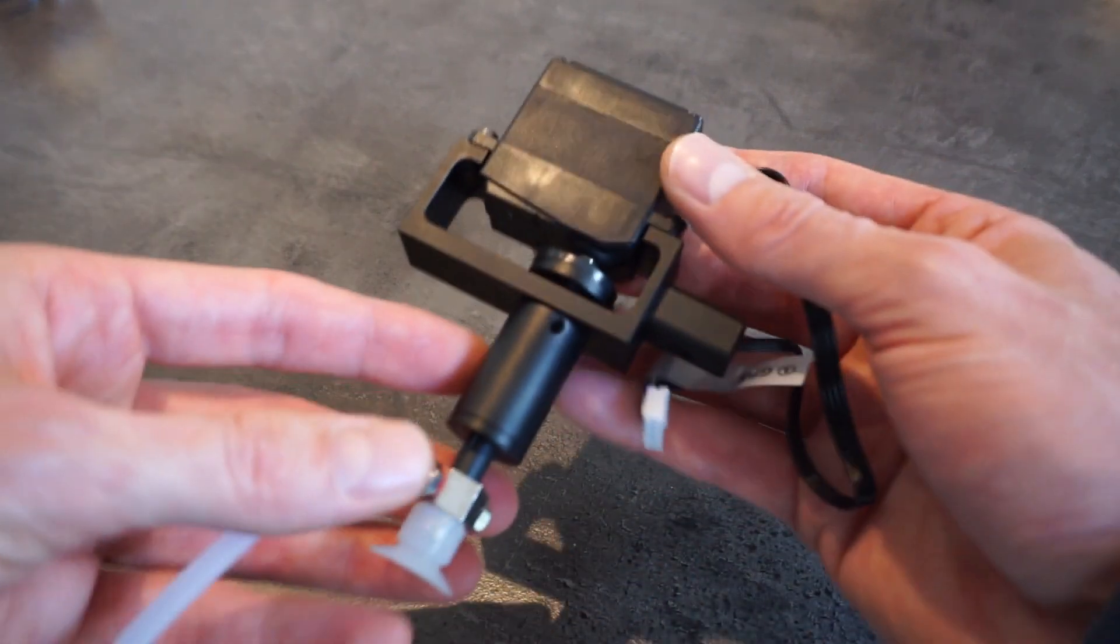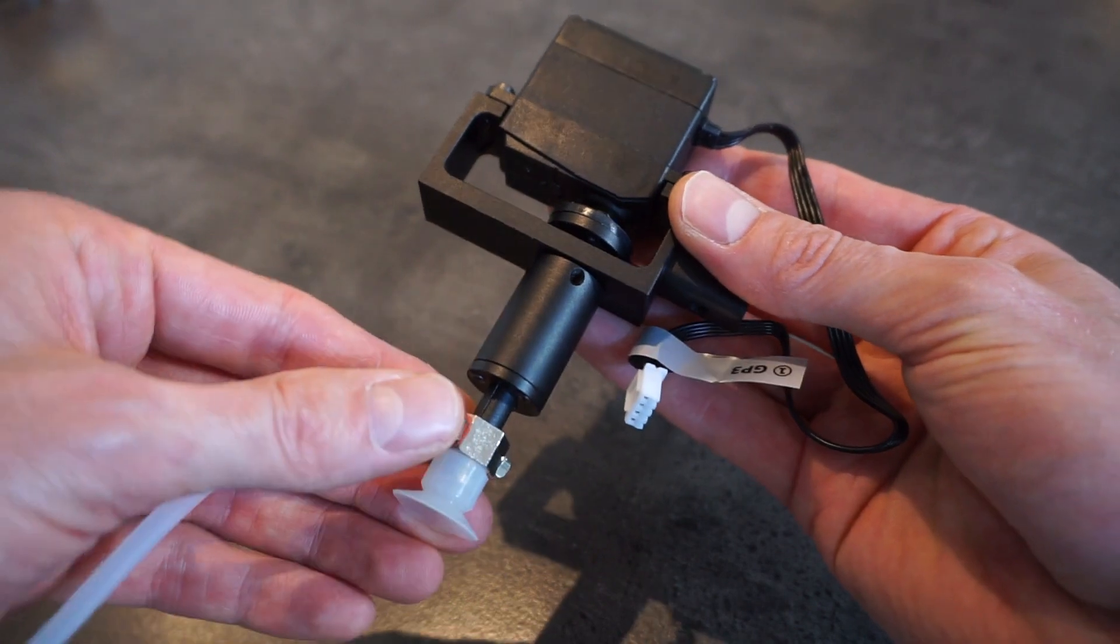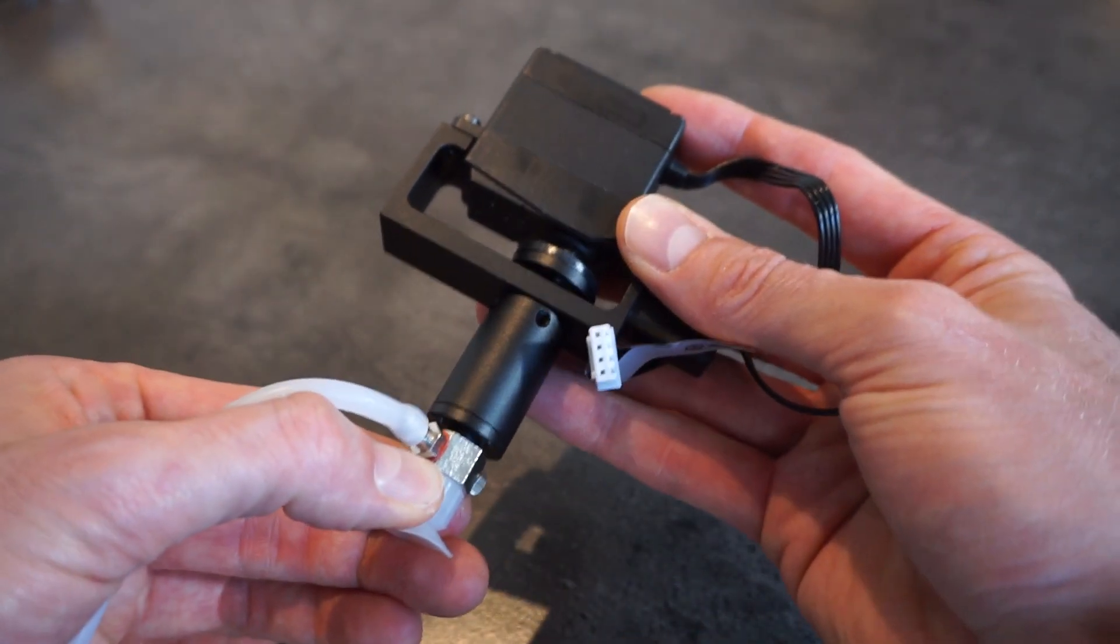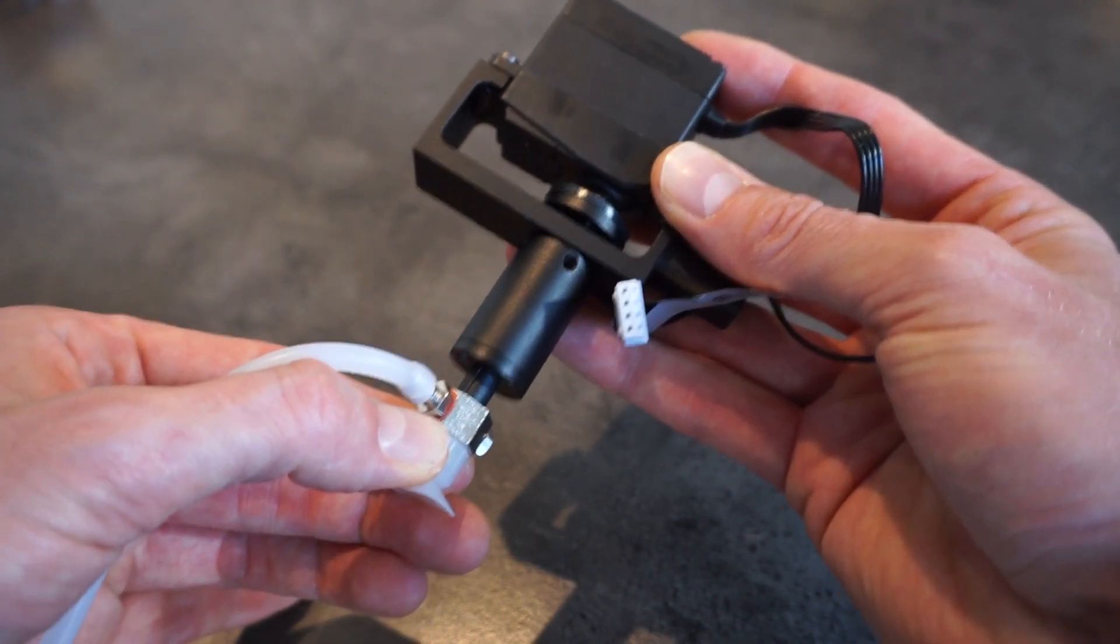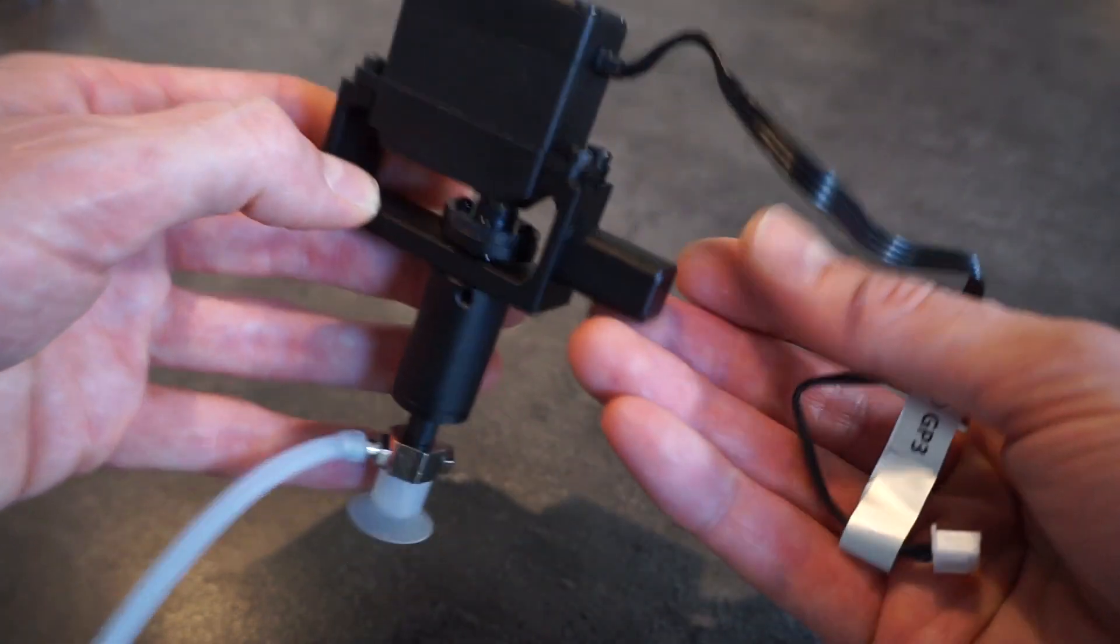The vacuum cup is one of the most versatile end effectors supplied with the Dobot. It can be used for pick and place operations for all sorts of parts, as long as the part has a somewhat flat and smooth top surface. Here you can see the cup mounted to the fourth axis, which is driven by a small servo motor.